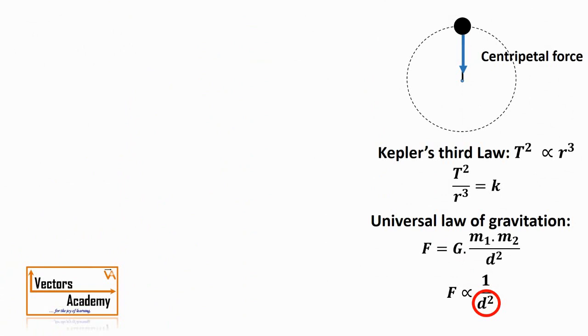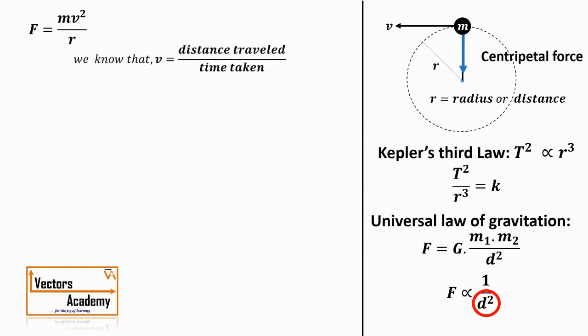In circular motion, if you consider the mass of the object as m moving with velocity v, and the radius of the circular path or distance from the center as r, then the centripetal force is F = mv²/r. We know that velocity is distance traveled upon time. As the object is moving in a circular path, the total distance traveled will be the circumference 2πr, and the time taken for one revolution is T. So v = 2πr/T.